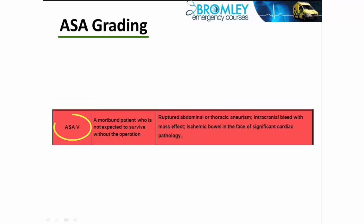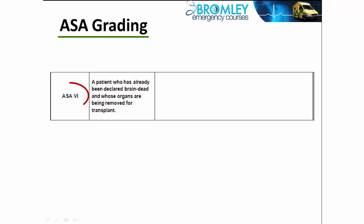ASA grade 5 is a patient who will die if you don't operate — they're very ill but you have to operate to save their lives. Examples include a leaking aneurysm or intracranial bleed with mass effect. You either operate or decide they're not operable. The final grade, ASA 6, is a rather sad one: it's for someone who is essentially brain dead and you're taking their organs, so long-term patient welfare is not the concern.